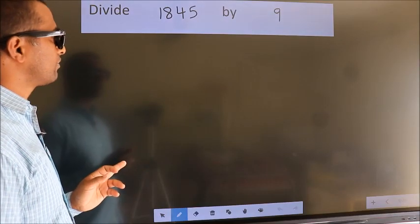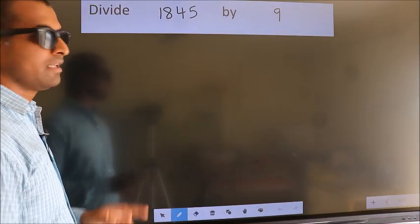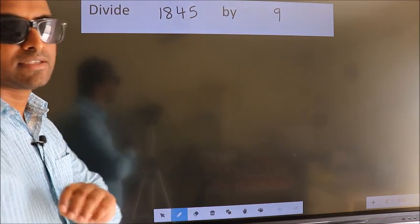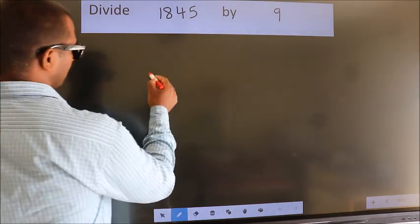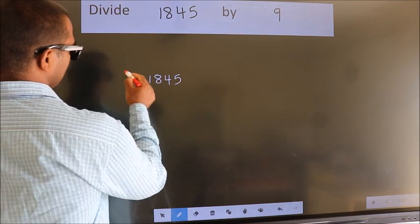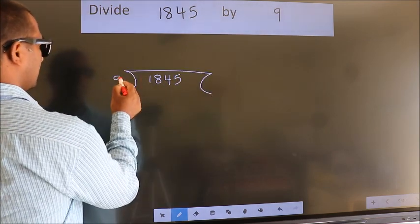Divide 1845 by 9. To do this division, we should frame it in this way. 1845 here, 9 here.